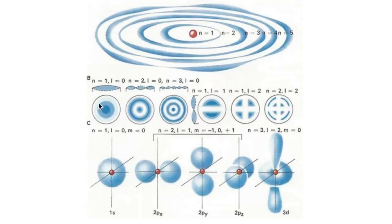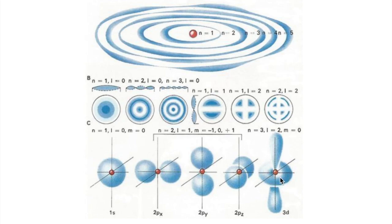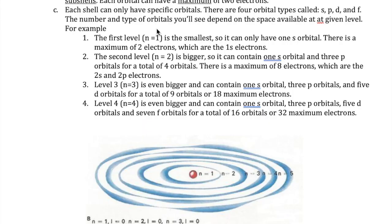The shapes of these orbitals are shown here. This is an S orbital, these are P orbitals, and this is an example of a D orbital. We will now visit each of the levels, or each of the floors of these weird apartment buildings, to understand them a little bit more.